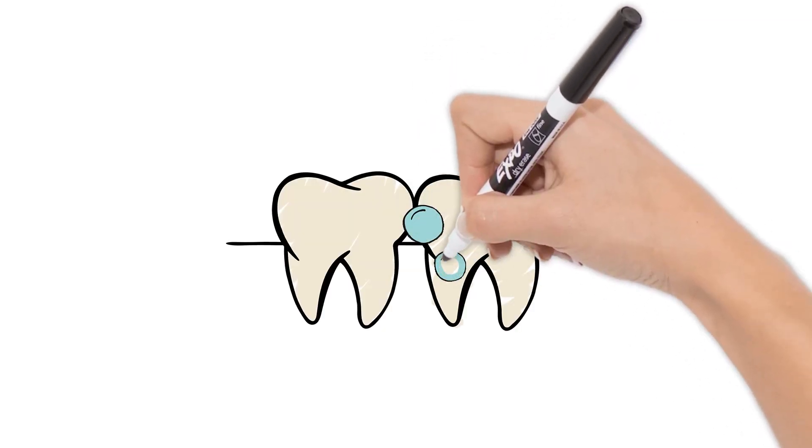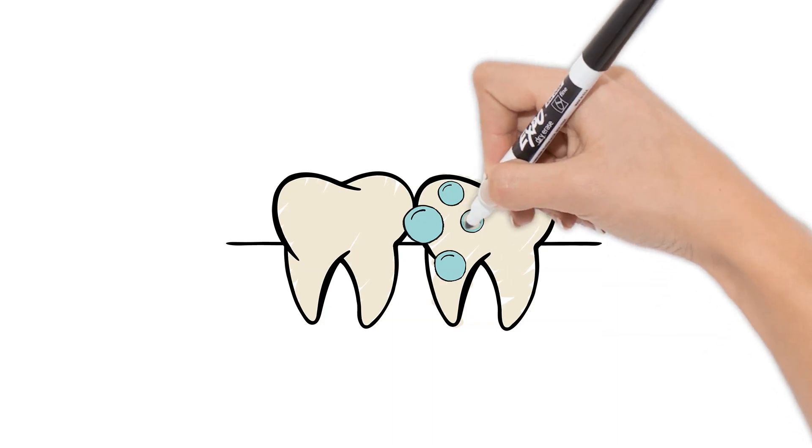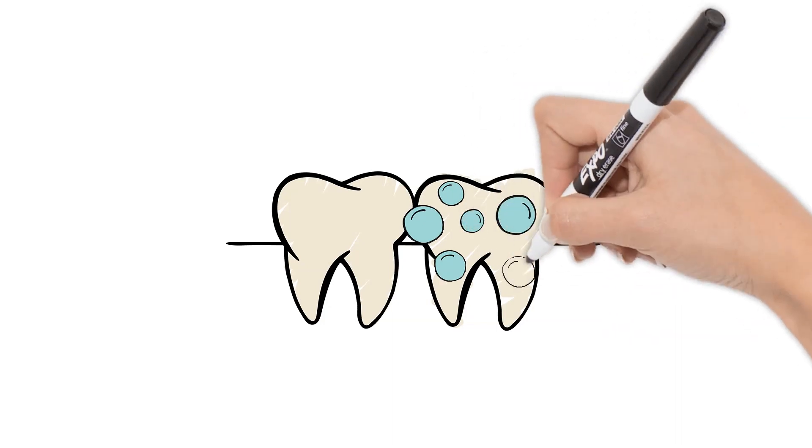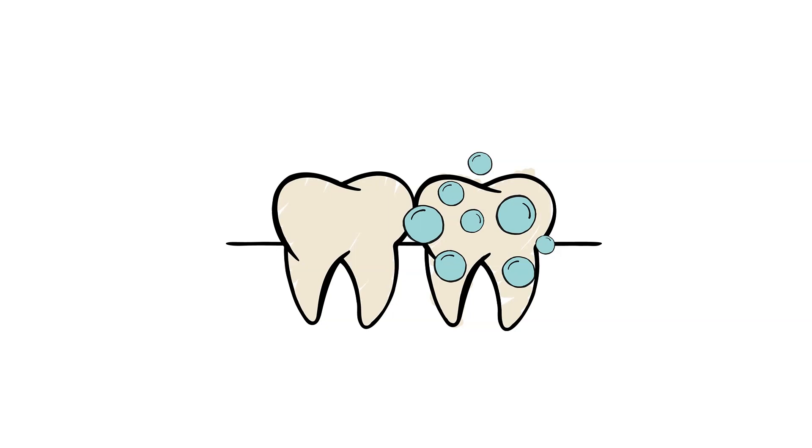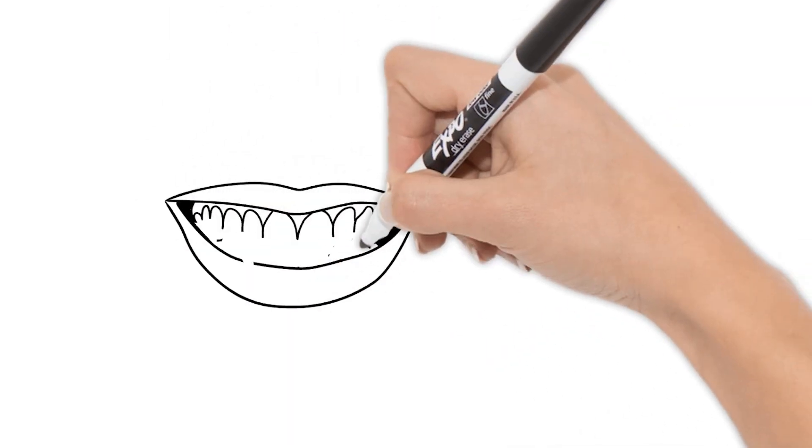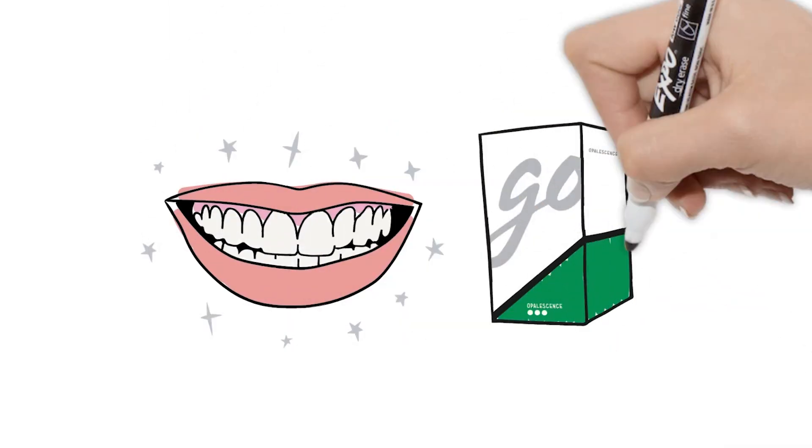Teeth whitening is the transformation of these discolorations. Oxidizing molecules enter the enamel prisms and dentin, converting the discolorations into simpler and thus lighter molecules, giving a brighter smile.